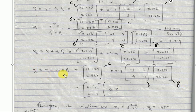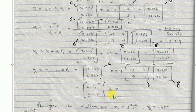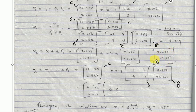R2 equals R1 minus alpha_1 times A times P1. Computing in the calculator with 1.214 times matrix A times matrix B gives 0.021 and 0.002. This is nearly equal to 0. Since R2 is nearly zero, we stop the iteration at the second step. The answer is X1 equals 2.613 and X2 equals 1.455.